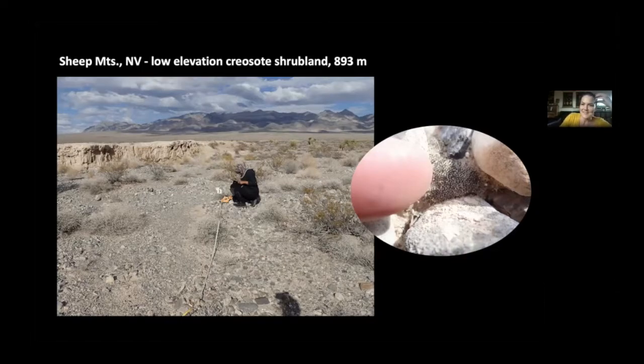She's collecting in that same sheep mountains gradient that Kirsten showed you in her presentation. So this is the lowest, driest site here. You can see that little blob there. Can you guys see my cursor? That pink thing there is my finger, for scale. The caninervis at this site is extremely tiny.